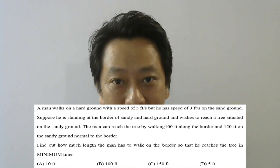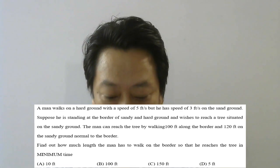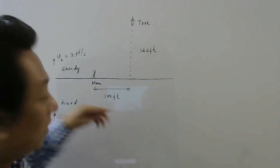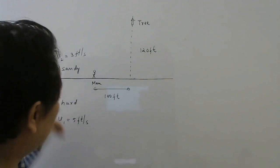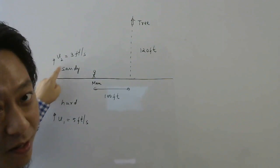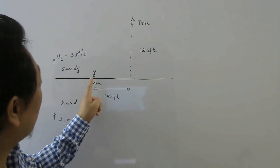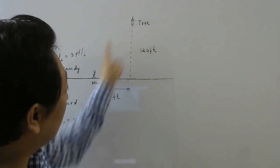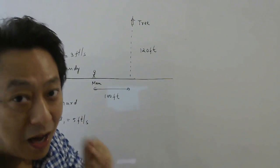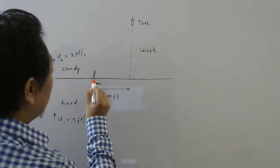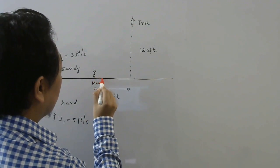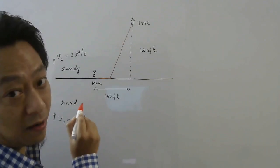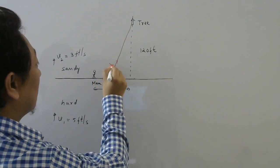Find out how much length the man has to walk on the border so that he reaches the tree in the minimum time. Let's understand the question through this diagram. This is the border separating sandy ground and hard ground. In hard ground his speed is 5 feet per second. In sandy ground his speed is 3 feet per second. The man can walk 100 feet along the border and then walk 120 feet perpendicular to the border to reach a tree on the sandy ground.